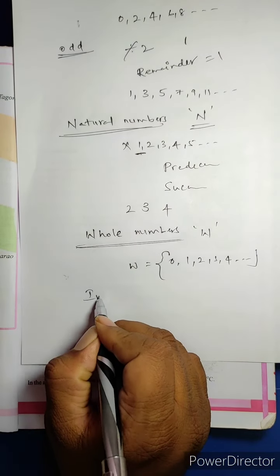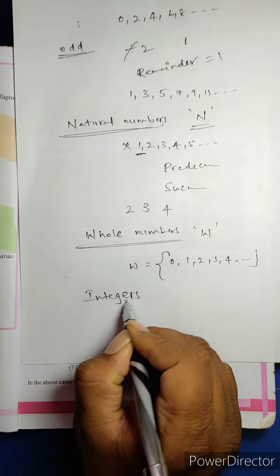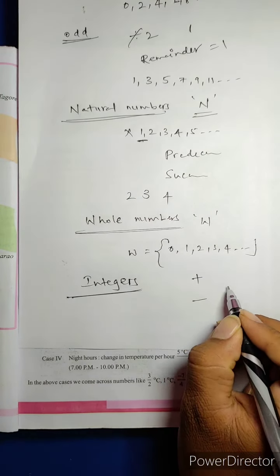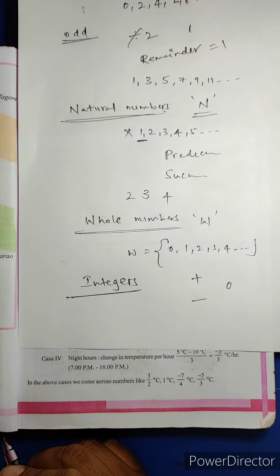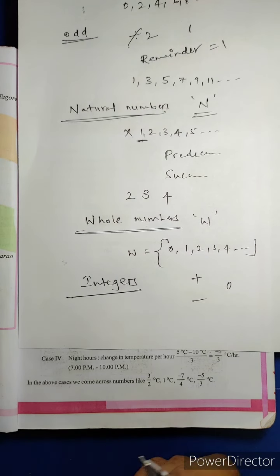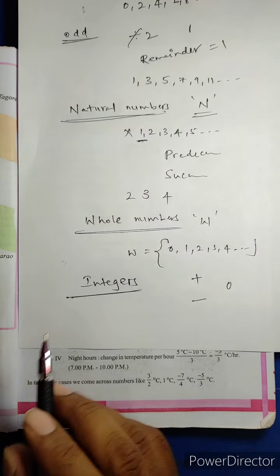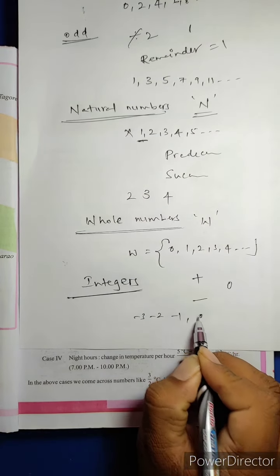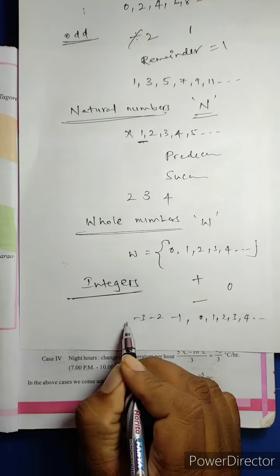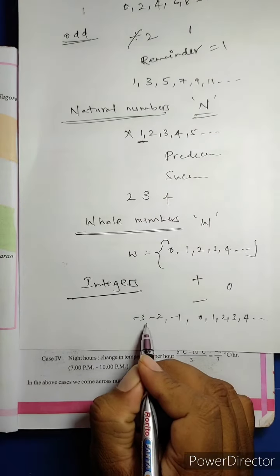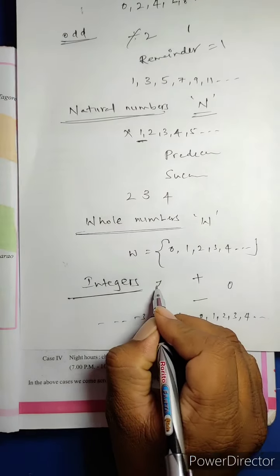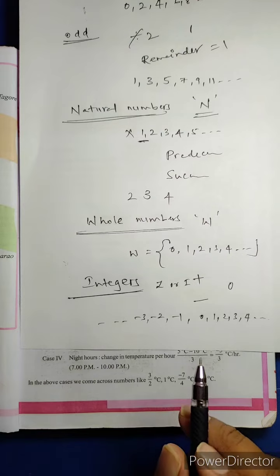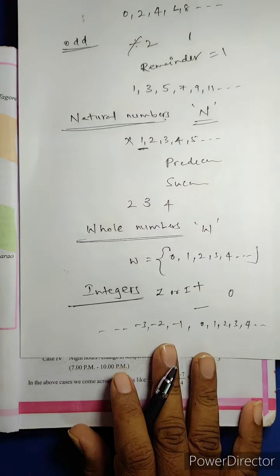And then next: Integers. The set of positive numbers, negative numbers including 0 are called Integers. The set of negative numbers including whole numbers are called Integers. Integers are denoted by Z or capital I.